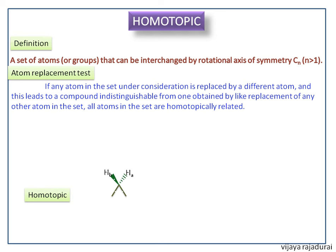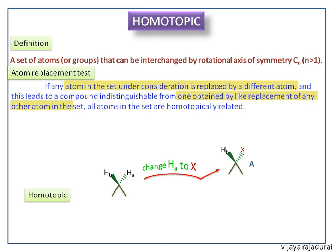Now we see examples for homotopic. This is one of the best examples. Here we change HA to X — we get structure A. Then we change HB to X — we get structure B.